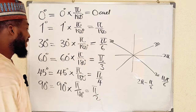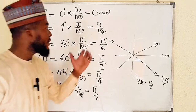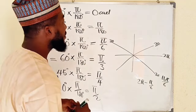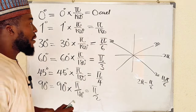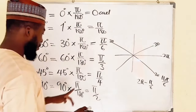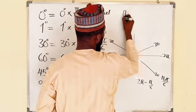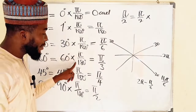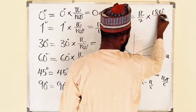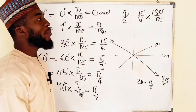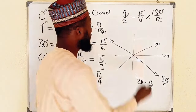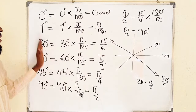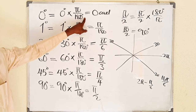What if you are given radians and need to convert back to degrees? Just take the reciprocal: instead of multiplying by π/180, multiply by 180 degrees divided by π. For instance, if you are given π/2 radians, multiply by 180 divided by π. The π cancels, and 180 divided by 2 is 90, which means π/2 equals 90 degrees.